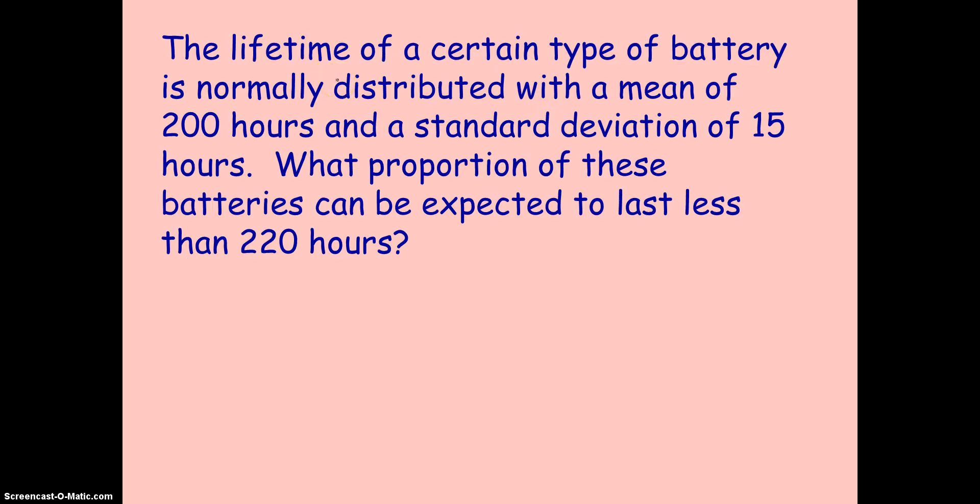So let's try an example with this. Again, haven't memorized it. Example, the lifetime of a certain type of battery is normally distributed. Okay, so here's your first clue. Normally distributed, so we can always think already, we're going to be thinking normal curve. With the mean of 200 hours, that's what mu equals, a standard deviation of 15 hours, and that's our standard deviation. What proportion of these batteries can be expected to last less than 220 hours? So, well, that's not quite one or two or three standard deviations, so we can't use the empirical rule. So we're going to have to resort to using our z-score to figure it out. We're going to have to compare it to the standard normal curve. So what's our formula? Well, here's a probability statement. So probability that they last less than 220 hours in a situation.